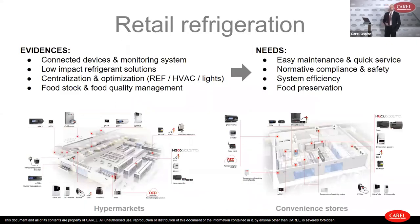Let's look at retail refrigeration. Usually when we look at a supermarket or hypermarket, we see that everything is connected together — from compressor racks to display cabinets, all devices exchange information, trying to optimize the whole system. Centralization is very important in a supermarket from the point of view of refrigeration, air conditioning, and light management. Supermarket chains are also moving to low-impact refrigerant solutions due to regulations.